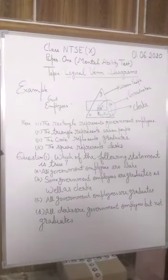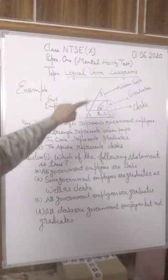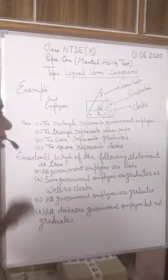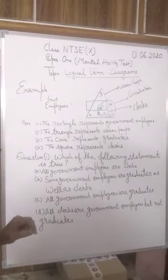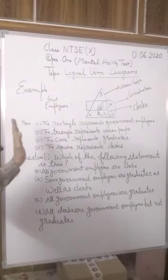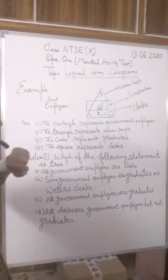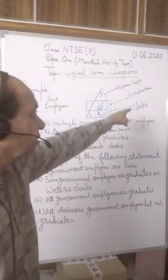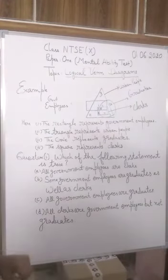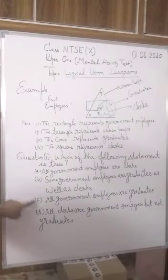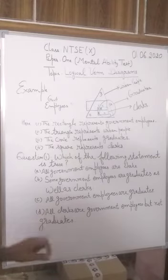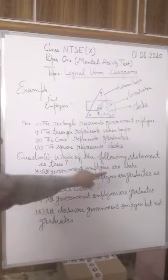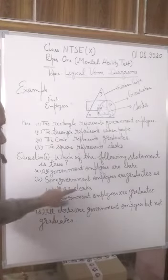Here, 'all' means everything, which includes triangle, rectangle, square, as well as circle — which is not possible because rectangle is outside the triangle and some part of the circle is also outside the triangle. So statements A, C, and D are totally wrong. The only valid option involves 'some government employees who are graduates as well as clerks.'